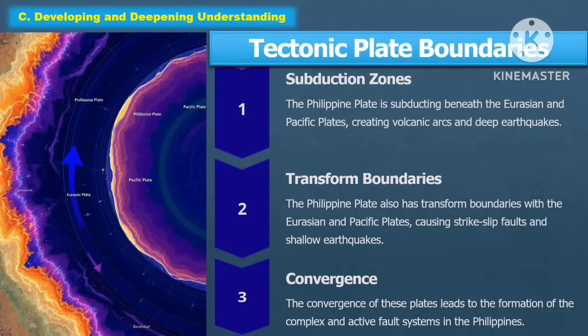The following are the tectonic plate boundaries. First is the subduction zone — the Philippine plate is subducting beneath the Eurasian and Pacific plates, creating volcanic activity and deep earthquakes. Second is transform boundaries — the Philippine plate also has transform boundaries with the Eurasian and Pacific plates, causing strike-slip faults and shallow earthquakes. Third is convergence — the convergence of these plates leads to the formation of the complex and active fault systems in the Philippines.